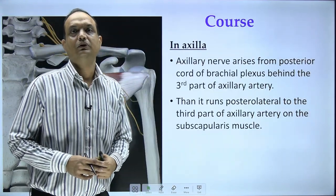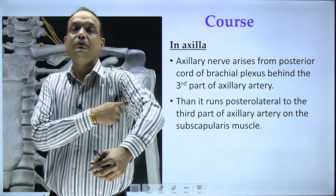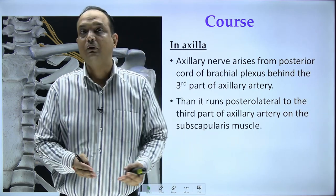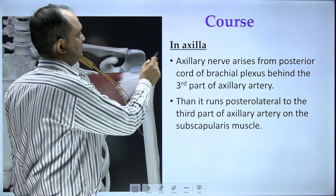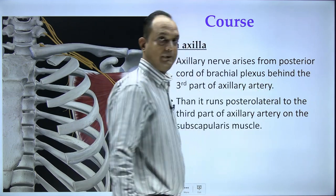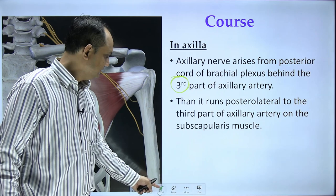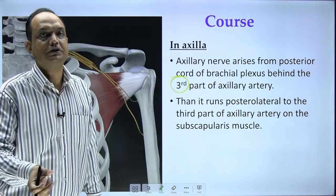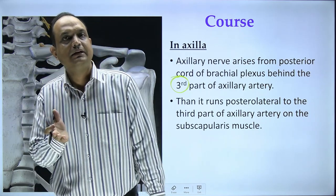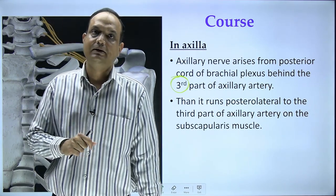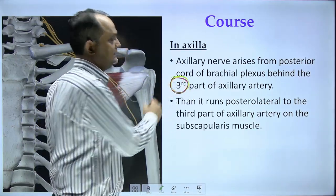The axillary nerve arises in the axilla and goes posteriorly toward the surgical neck of the humerus, disappearing from the axilla into the posterior part through the quadrangular space. In the axilla, it arises from the posterior cord and is related behind the third part of the axillary artery. Note that the brachial plexus cords are named in relation to the second part of the axillary artery, while their branches relate to the third part.